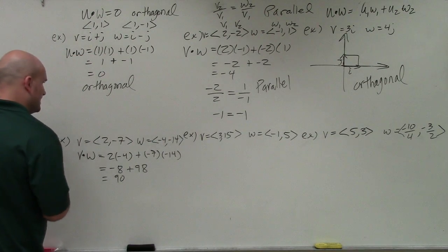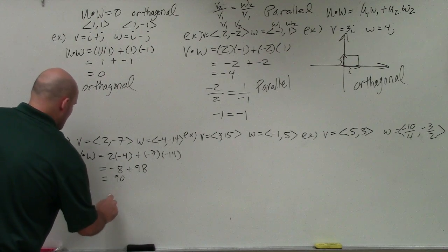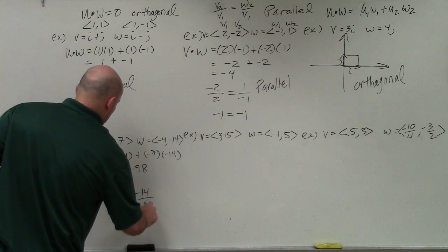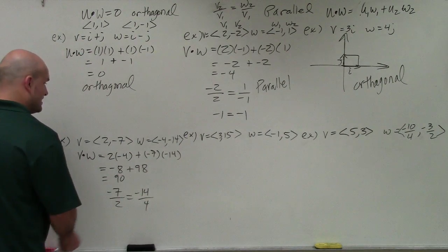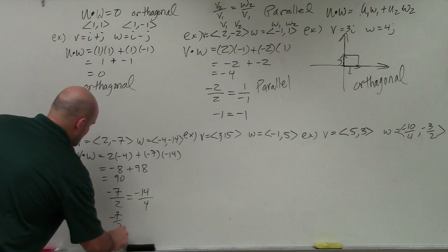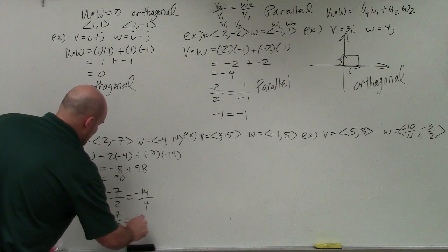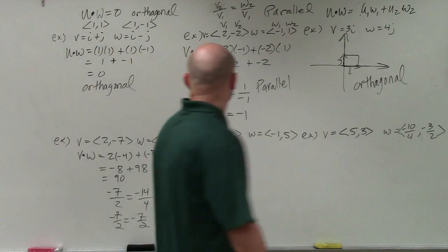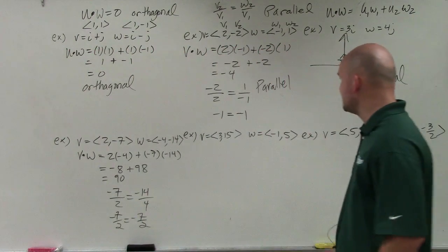Let's check parallelism. So I have negative 7 over 2 is equal to negative 14 over 4. Well, you can see that they both reduce. That's going to be negative 7 over 2 is equal to negative 7 over 2. Divide top and bottom by 2, and it works out.